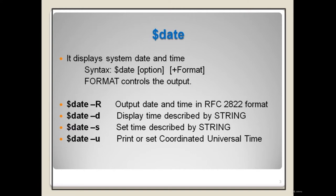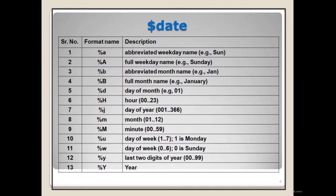The date command has several options. 'date -R' will output date and time in RFC format. 'date -d' will display the time described by the string. 'date -s' will set the time described by the string. 'date -u' will print coordinated universal time. These are some format names we can use as per our requirement in the output.